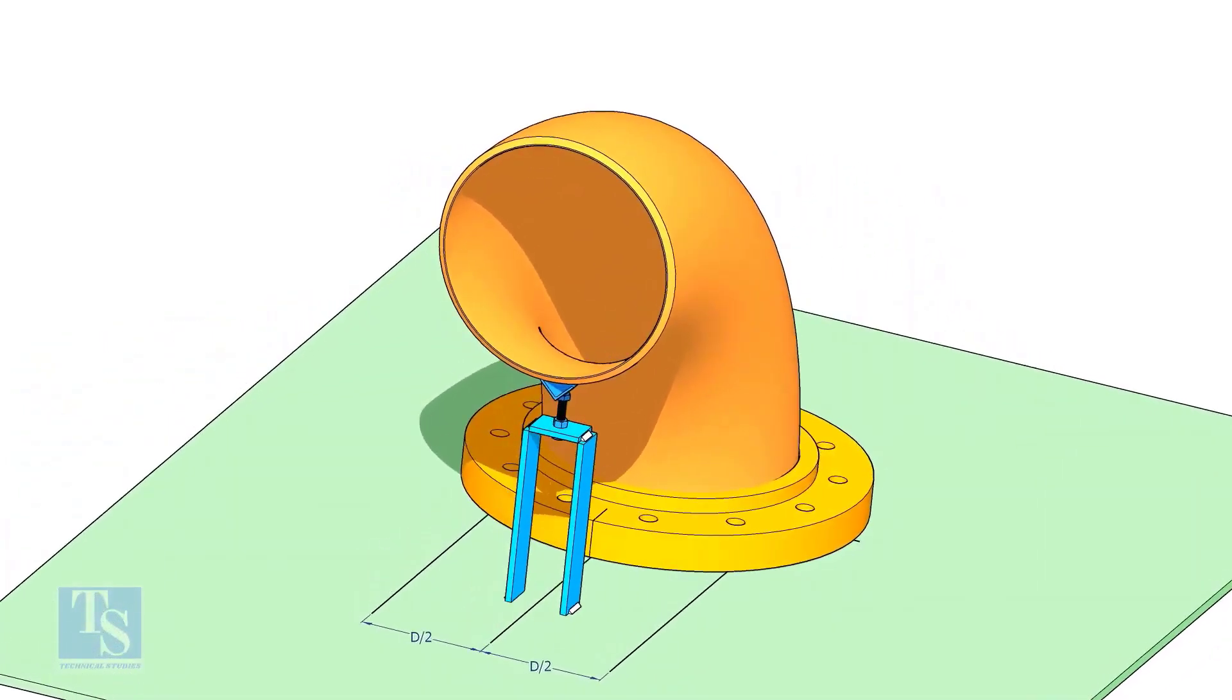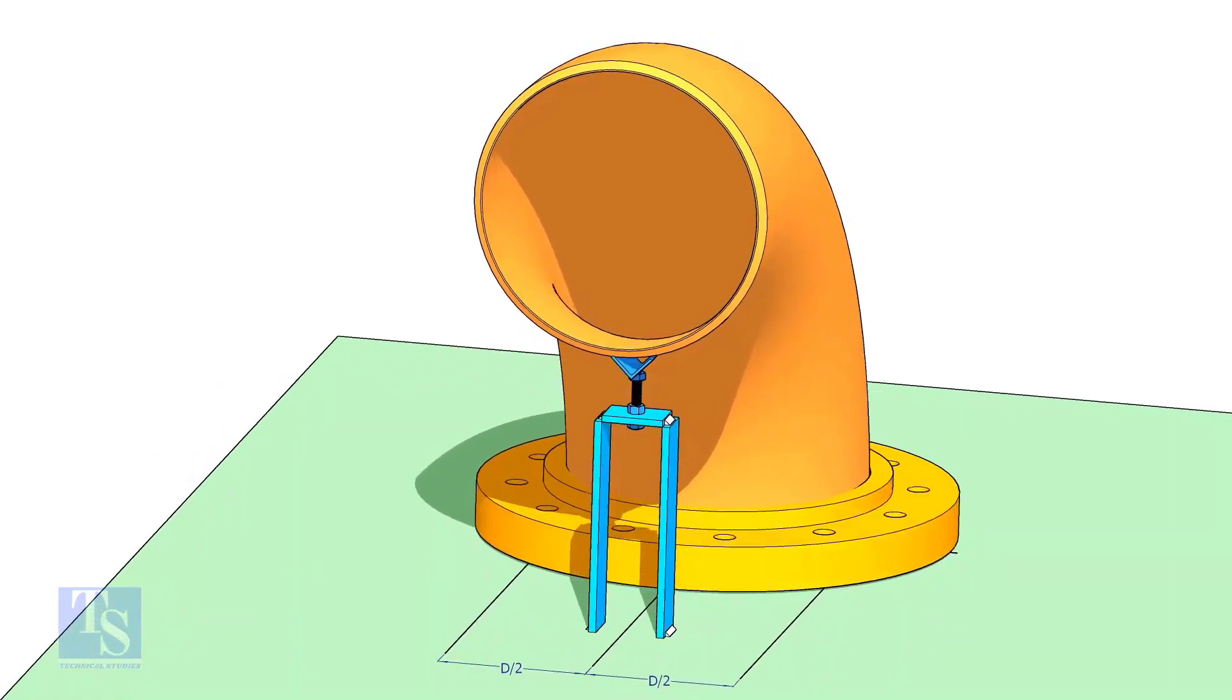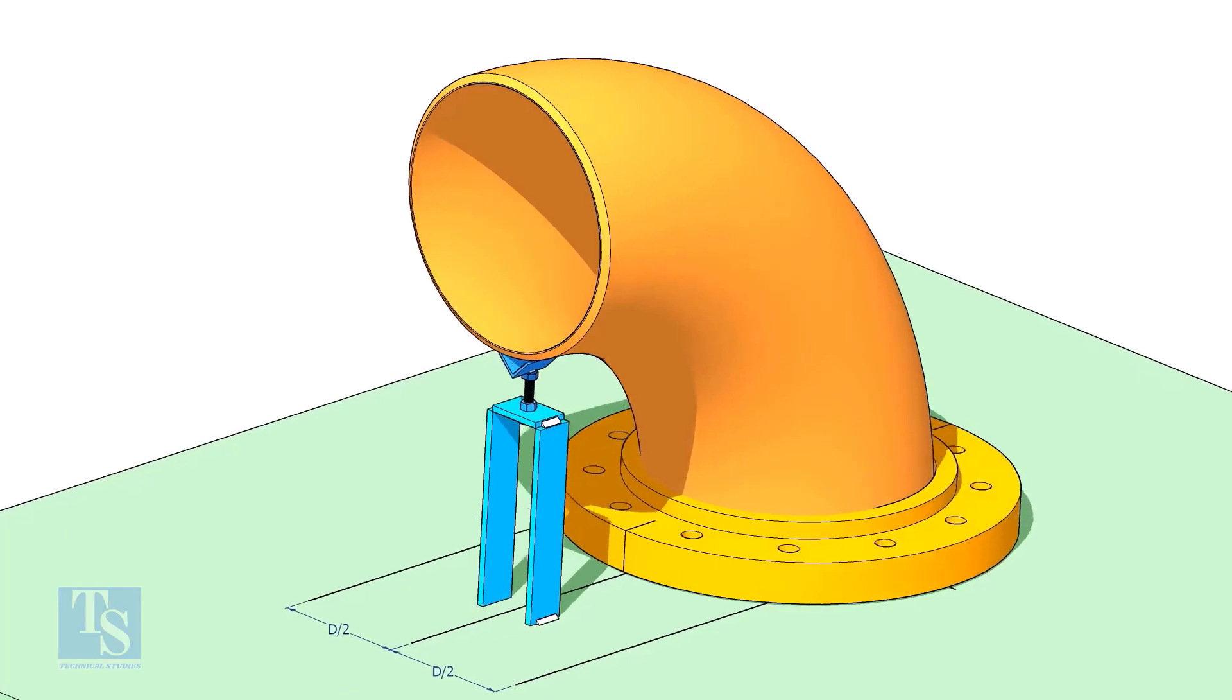If required, tack weld the screw jack below the elbow face as shown. Adjust the height of the bolt and level the face of the reducer.